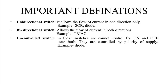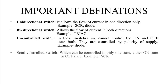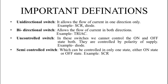Third is uncontrolled switches. In these switches we cannot control the on and off state. Example is diode. A diode is made to turn on or turn off by applying the polarity of external voltage. Fourth is semi-controlled switches. These switches can be controlled in one state only, either in on state or in off state. Example of this is silicon controlled rectifier.